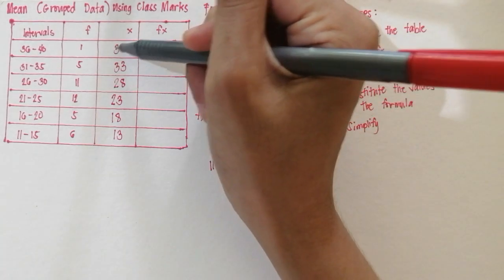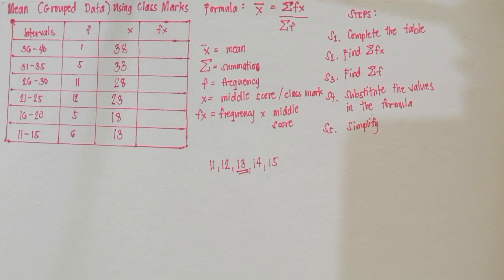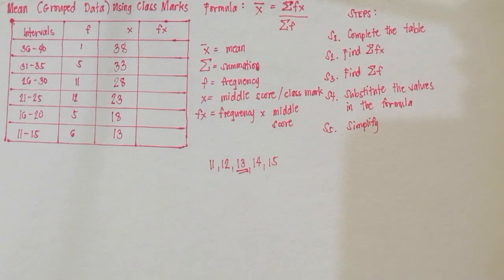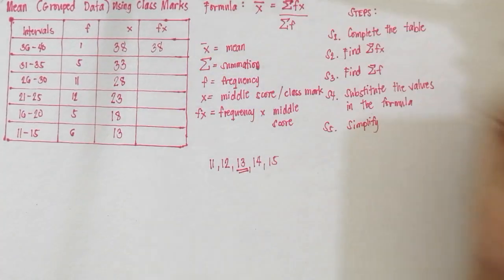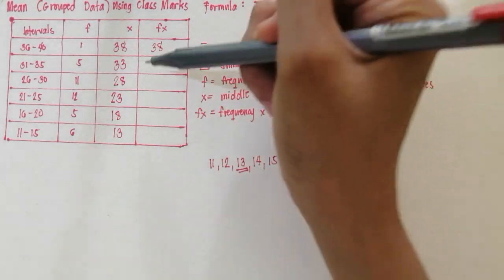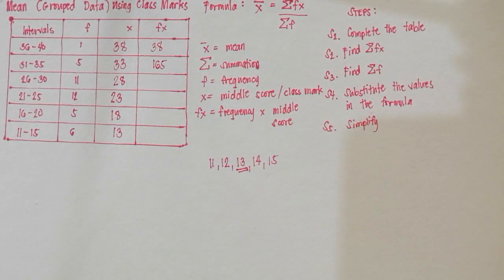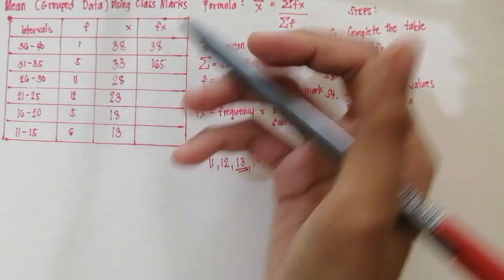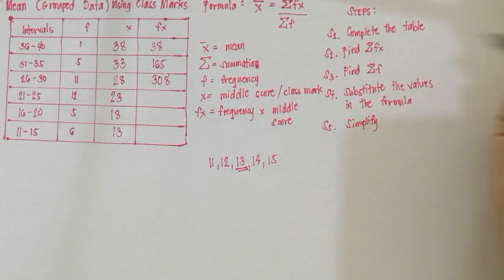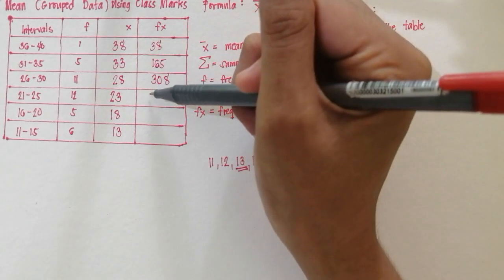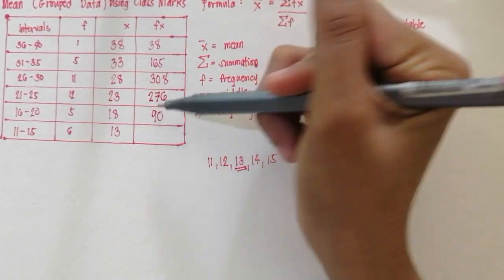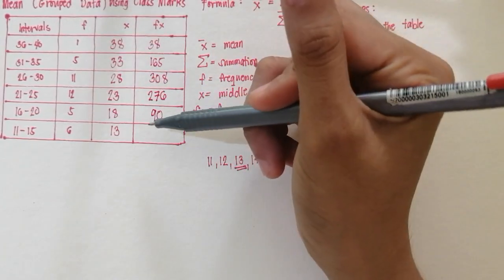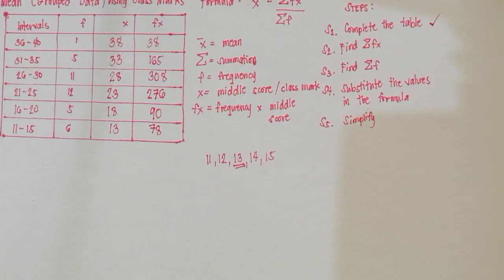The column for X is now complete. Proceeding to FX, we multiply F and X: 1 times 38 gives 38; 5 times 33 is 165; 11 times 28 is 308; 12 times 23 is 276; 5 times 18 is 90; and 6 times 13 is 78. We are done completing the table.